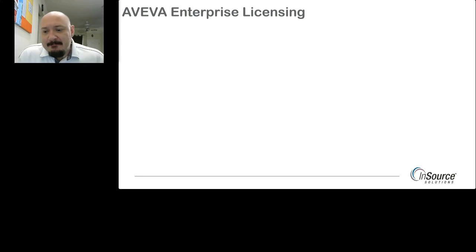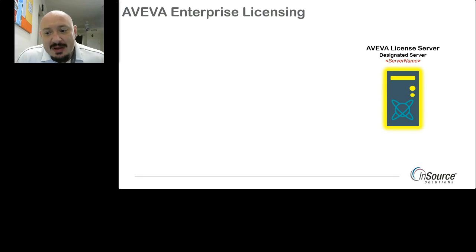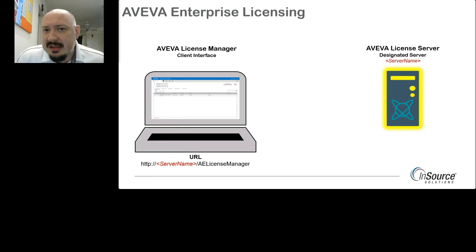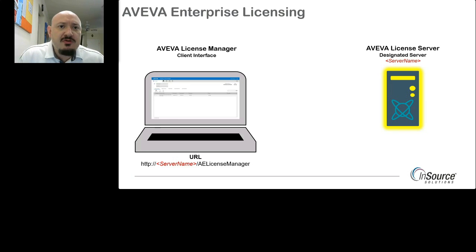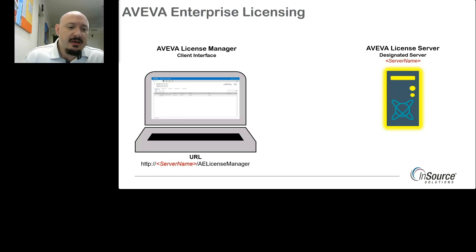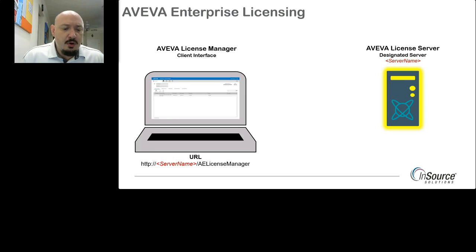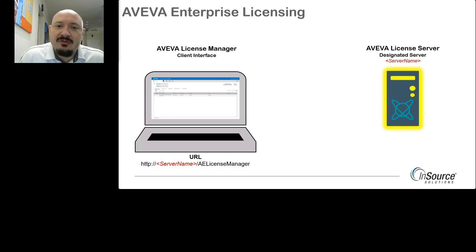Enterprise Licensing from Aviva is made up of two components: the licensing server and the licensing manager. Both are prompted during the install of any Aviva software. Keep in mind, you may only have very few license servers, but the license manager is a client interface to the license server. When opened in an HTML5 browser, you can use the URL pointing to the server name with /AELicenseManager to configure that server.